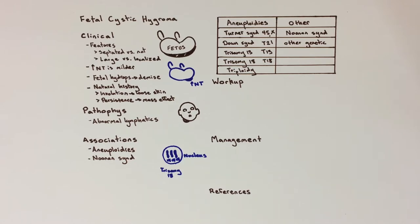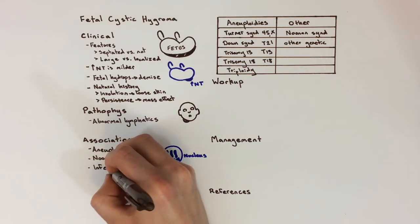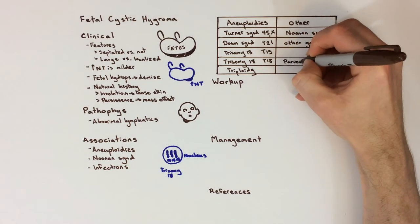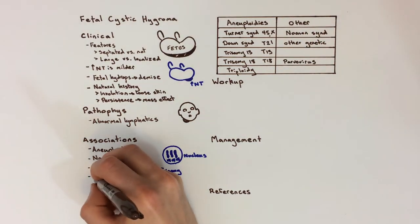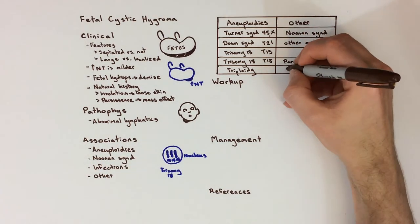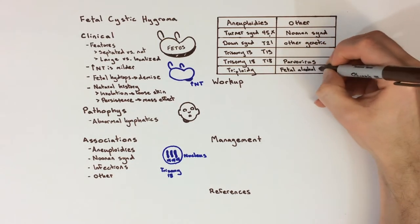Additionally, there can be non-genetic causes of fetal cystic hygroma, such as maternal viral infections like parvovirus or in utero alcohol exposure. Often though, there is no identifiable cause.